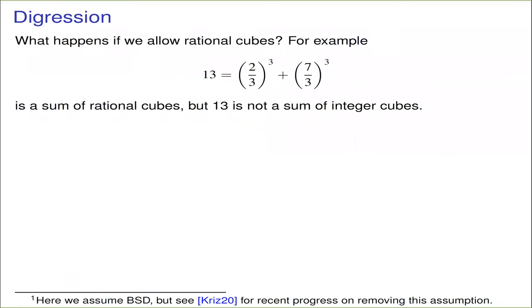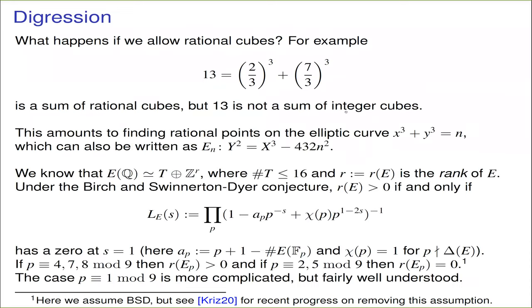Just another brief digression: if we were to ask the question about cubes of rational numbers, the problem has a different answer. For example, 13 is not the sum of two integer cubes, but it is the sum of two rational cubes. In general the question for sums of two rational cubes boils down to finding rational points on an elliptic curve — for each specific value of k there's an elliptic curve we can write down, and rational points on this elliptic curve correspond to rational solutions. We know from the Mordell-Weil theorem that the rational points on an elliptic curve form a finitely generated abelian group, which looks like a torsion subgroup of order at most 16 and some number of copies of Z.